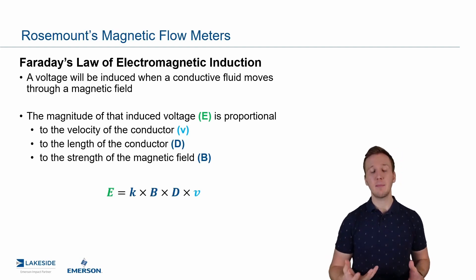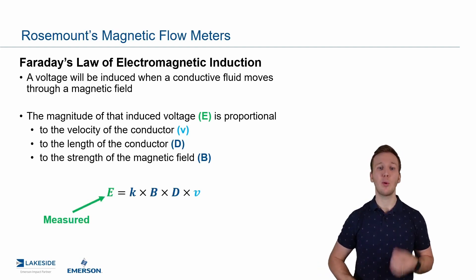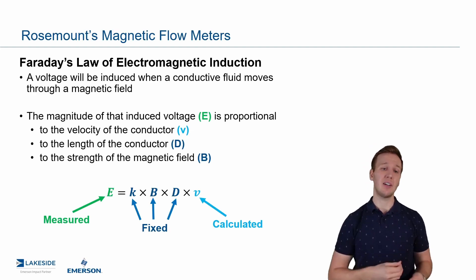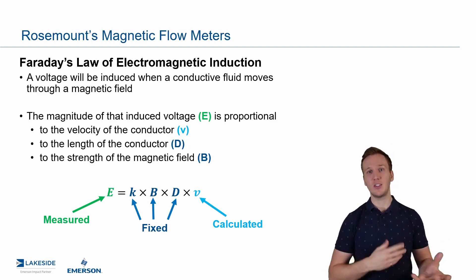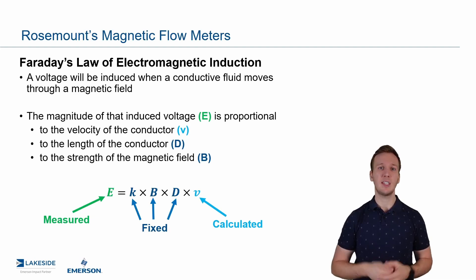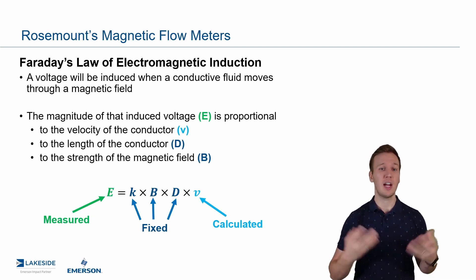And so all this can sum up in this nice simple equation here where we're measuring the induced voltage. K, B, and D are fixed and known, and then V, that velocity is something we then calculate. It's very simple when you have an equation of four unknowns that you can solve for it if you know three of those things, or you're measuring the piece that it's equal to. So pretty simple to calculate velocity and then ultimately calculate volumetric flow rates if you have that cross-sectional area, which we do.